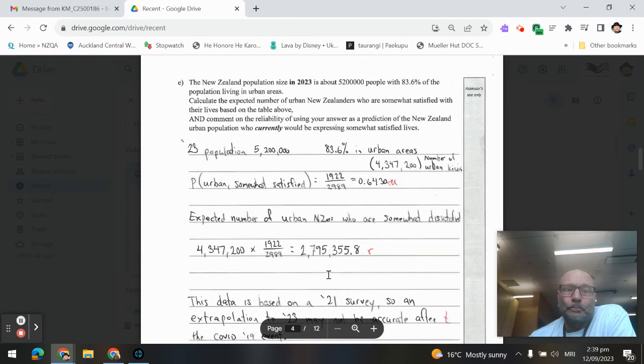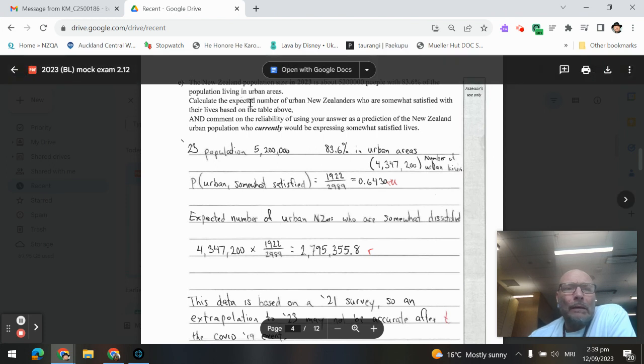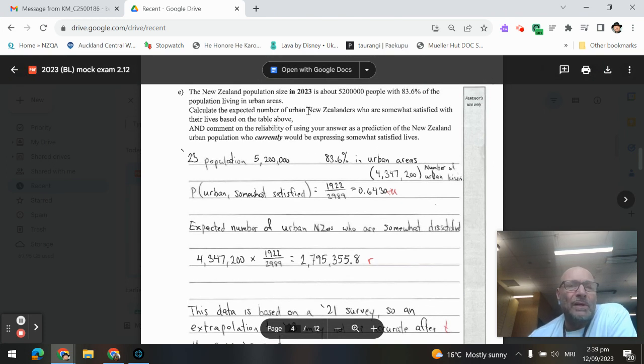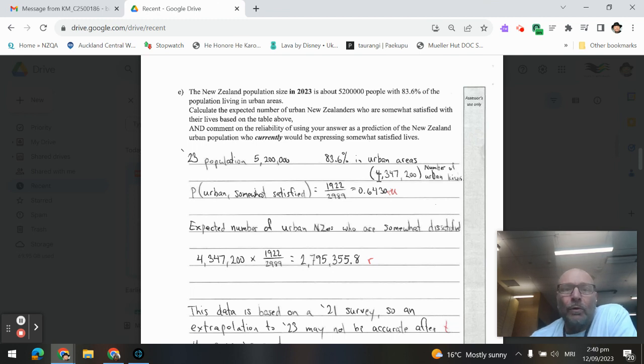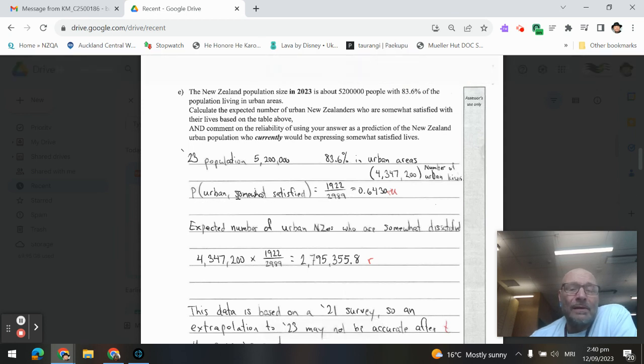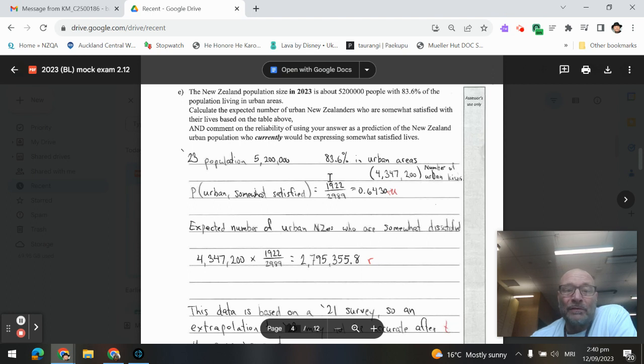Last one, we're looking to find out calculating the expected number of Kiwis somewhat satisfied with their lives. So we know that there were 5,200,000 people with 83.6% of the population in urban areas. First step, let's find 83.6% of the population. That gives us 4,347,200, and we also need the probability that somebody is somewhat dissatisfied in an urban area. That's going to be this from a previous Patai. If you got that one in there, there's an achieved mark.